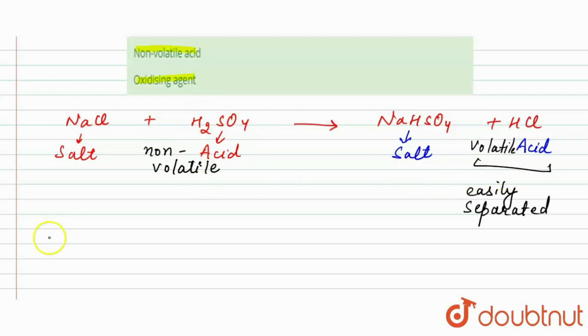So here we can say that the non-volatile property of H2SO4 is used to obtain a volatile acid. And it's a condition also that if you want a volatile acid, a non-volatile acid must be used.